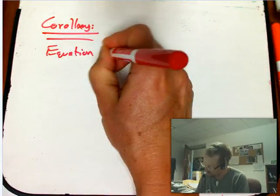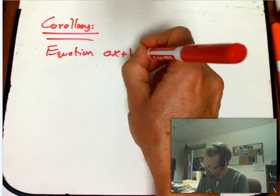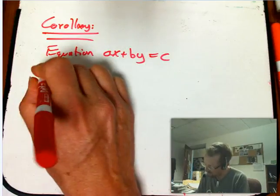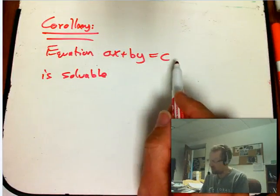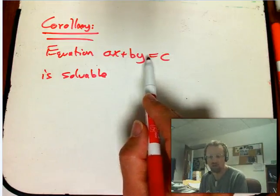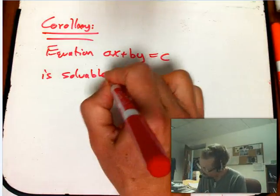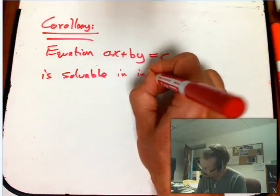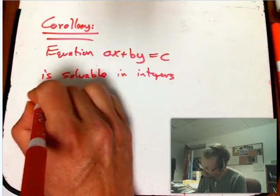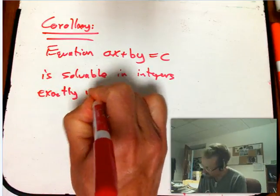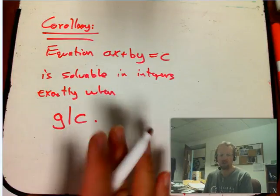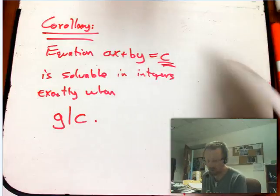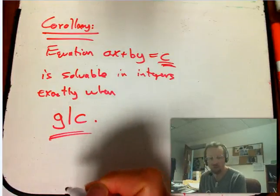The corollary is that the equation, if we phrase it in terms of solving linear Diophantine equations, AX plus BY equals C is solvable. In other words, given A, B, and C as the input data, I can find X and Y, and these are all supposed to be integers, but X and Y can definitely be negative, in integers, super crucial, if and only if or exactly when G divides C. This is just a restatement of saying that the set S, which is the set of all the C's you can possibly get out of here, is just the set of multiples of G.